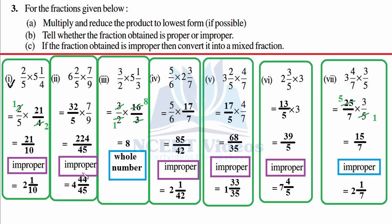Converting into mixed fraction: now the third part — 3/2 as it is, 5 threes are 15 plus 1 is 16 over 3. Cancellation: 2 into 16 is 8 over 3. The threes cancel, leaving 8 ones are 8 over 3 — so this is a whole number, a complete number, not a fraction at all.